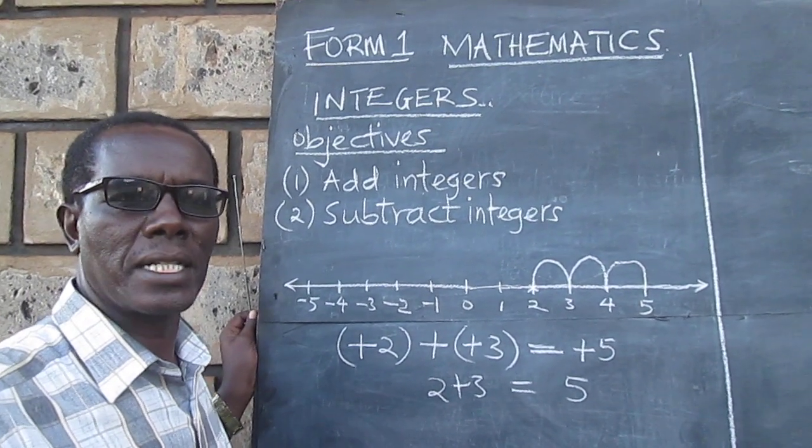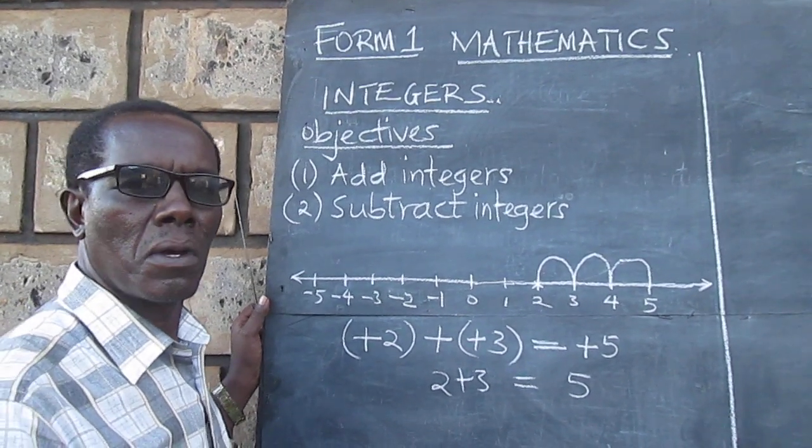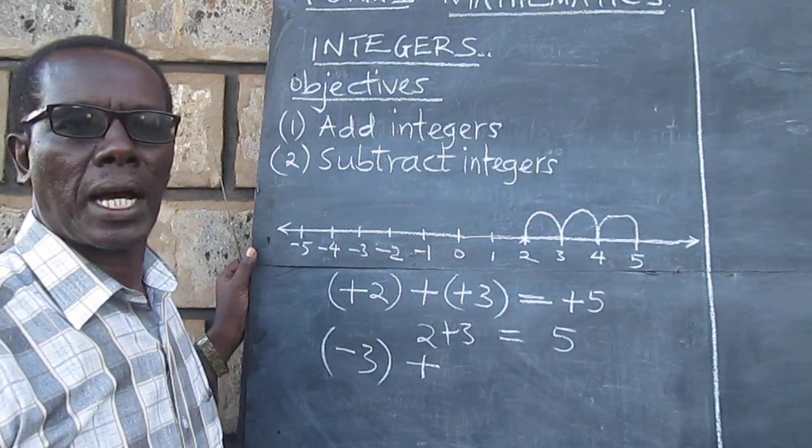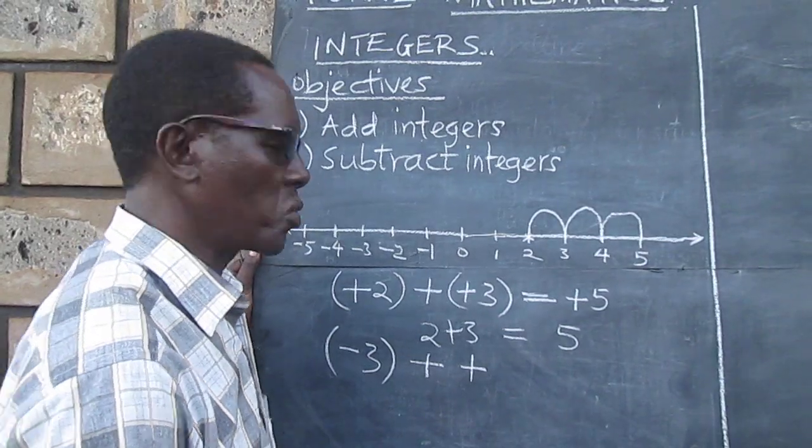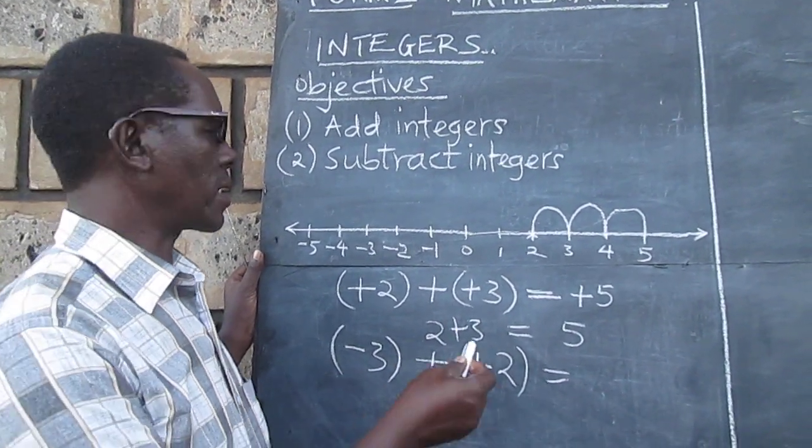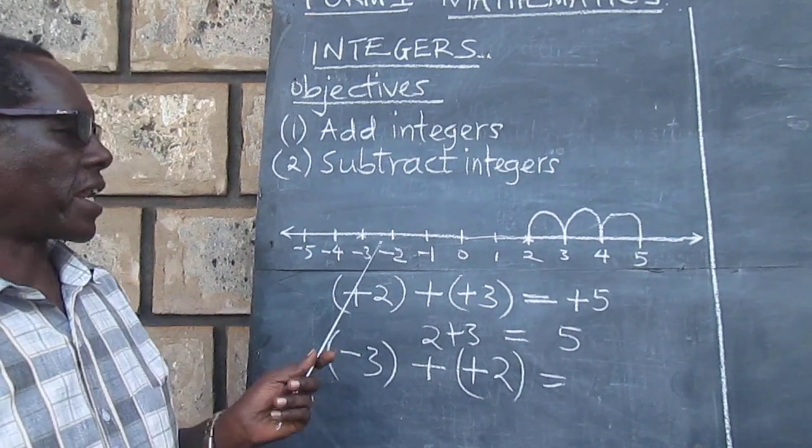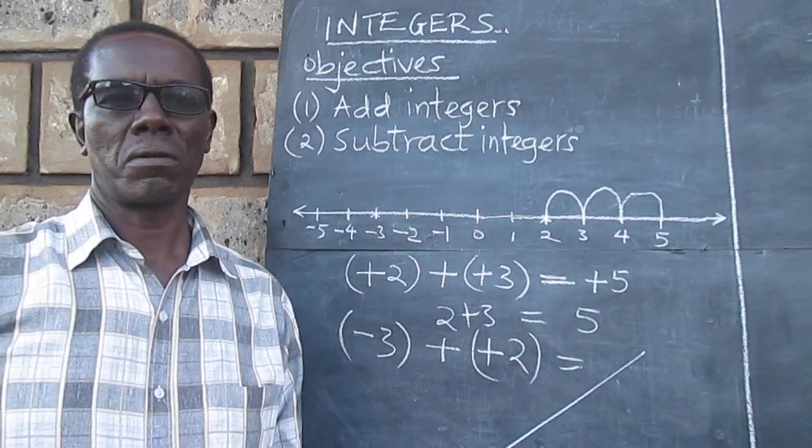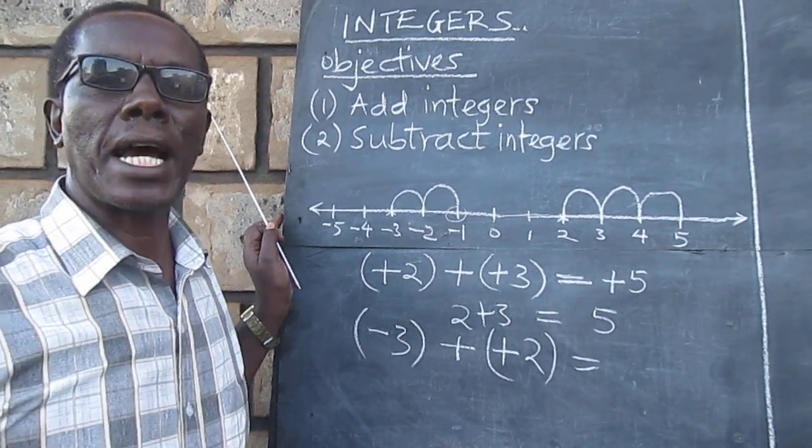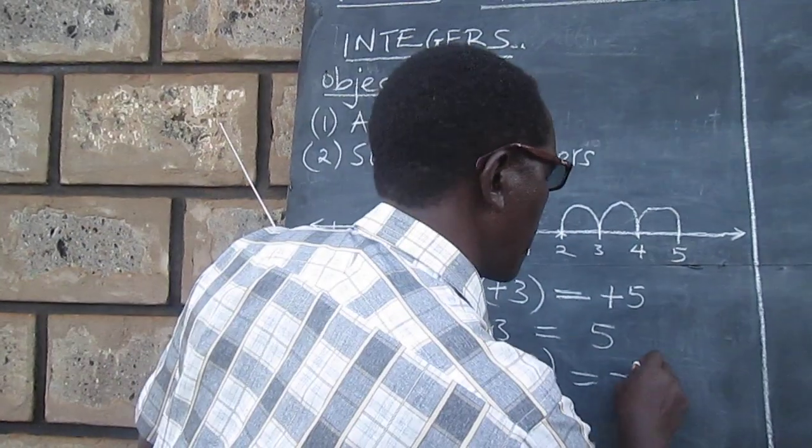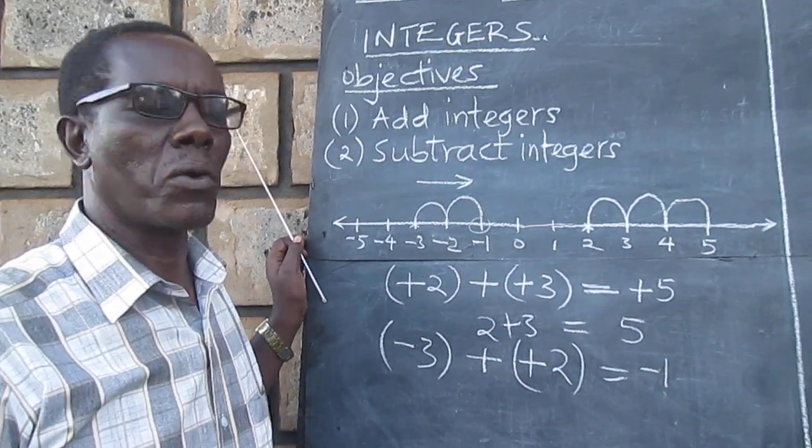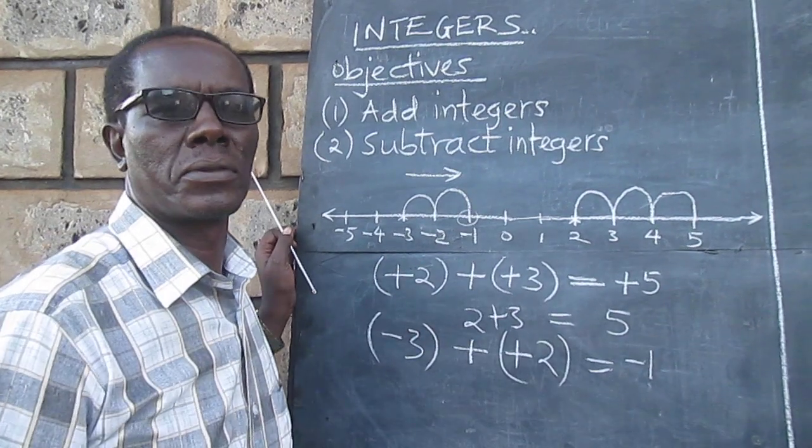We may also want to add to a negative number. For example, we could start from minus 3 and add positive 2. On the number line, again, we can move. We start from the minus 3 here. And then the direction is to the right of 0, two steps. And therefore, we move 1, 2. And therefore, we land at negative 1. It means we started at minus 3, moved in that direction, and therefore, we will stop at negative 1, one step to the left of 0.